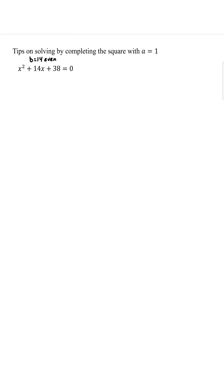We'll notice here that b is 14, which is an even number. So we'll start off by subtracting 38 both sides. Now we're going to complete the square.